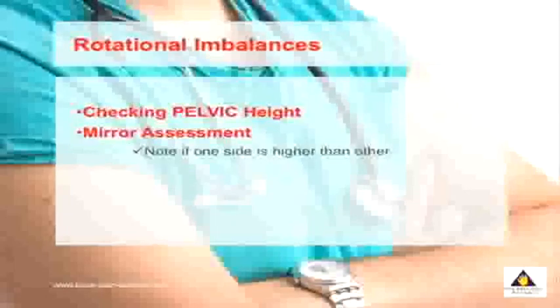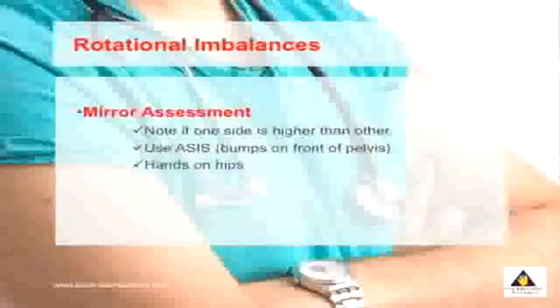The first test is very simple — all you're doing is looking at your pelvic height. Look in a mirror and note if one side of your pelvis is higher than the other. There are two landmarks you can use: the first is what's called the ASIS, which are the bumps on the front of your pelvis, or alternately you can just place your hands on top of your hips. One side of your pelvis being higher than the other creates what's called a rotational imbalance.